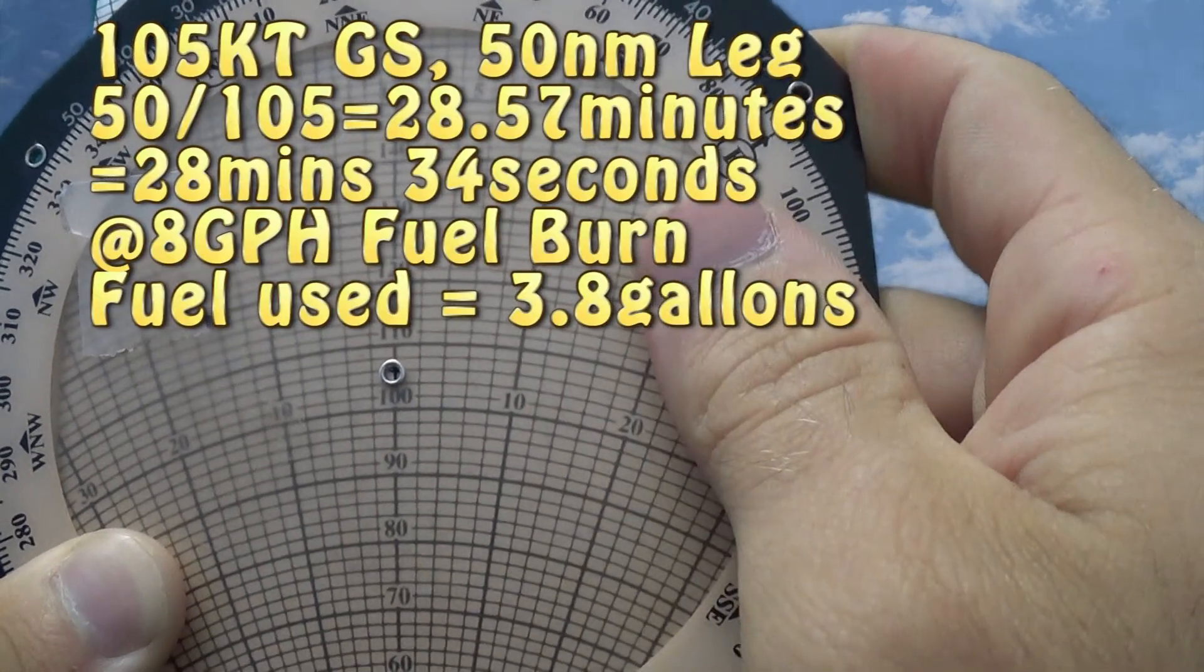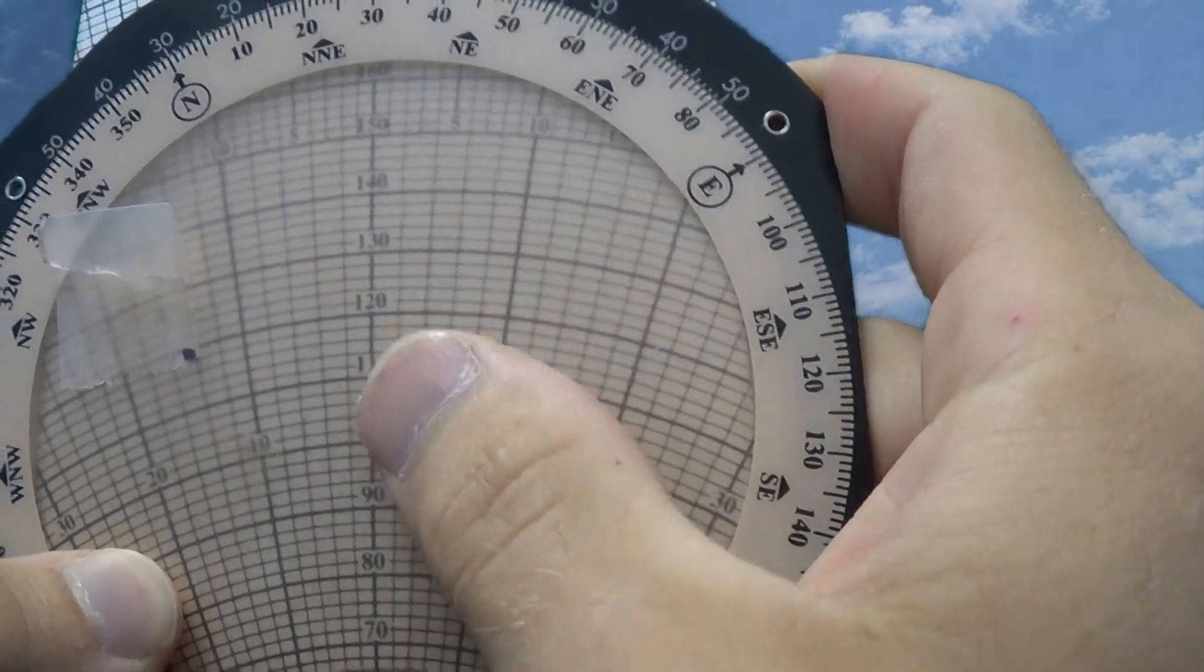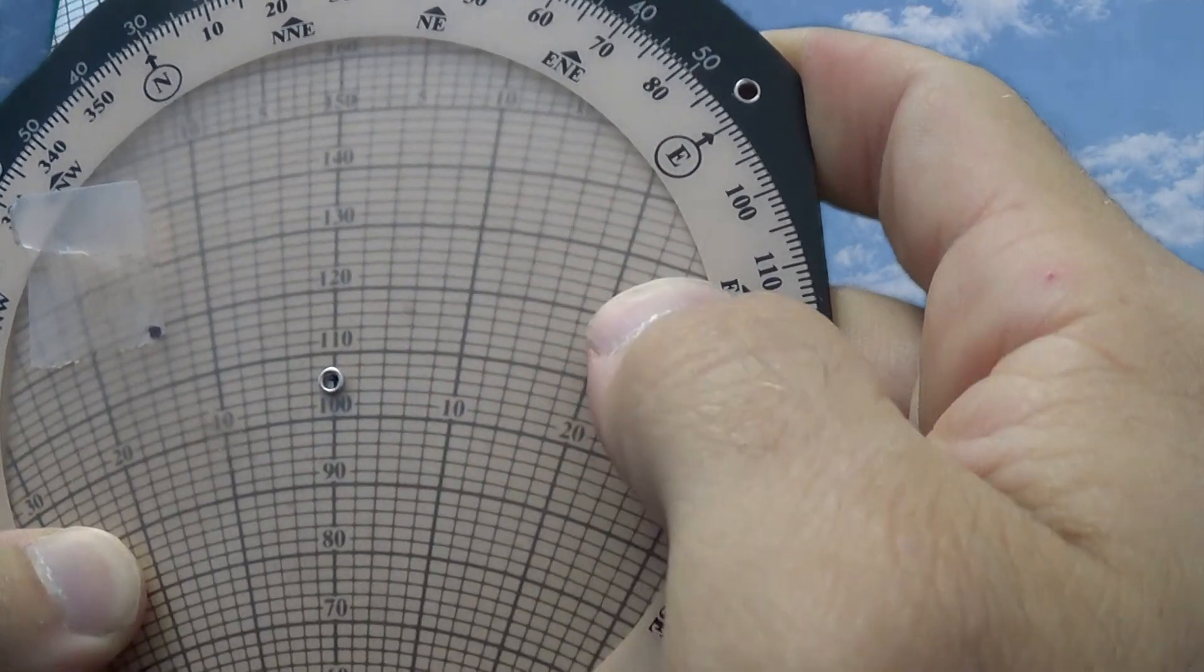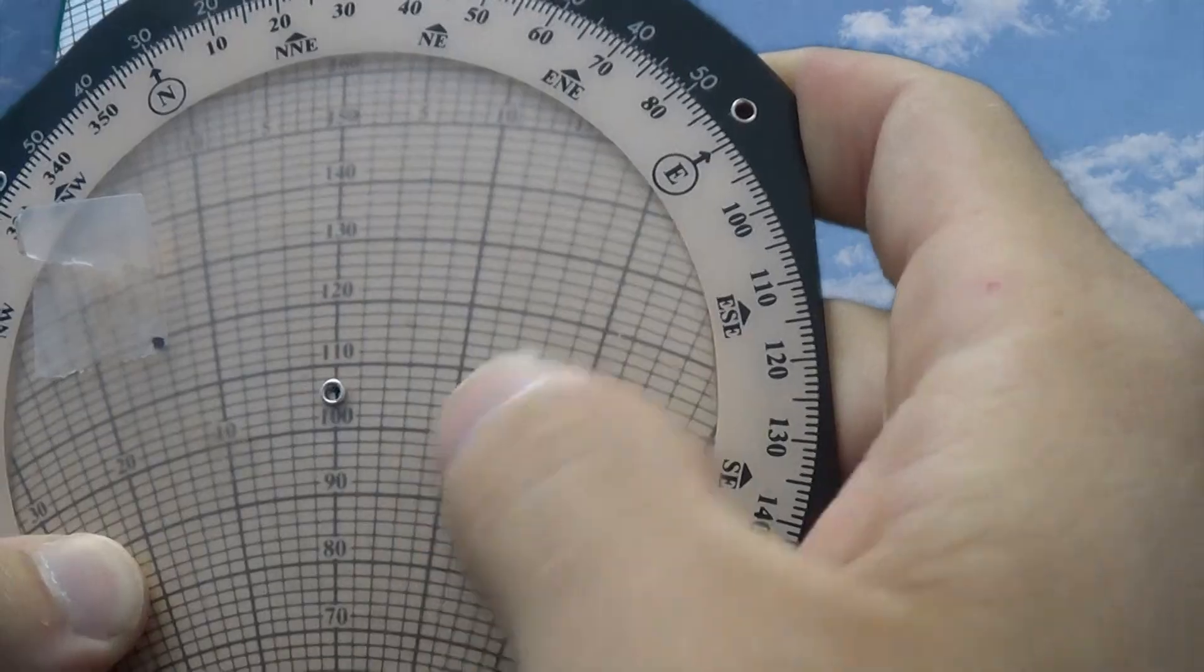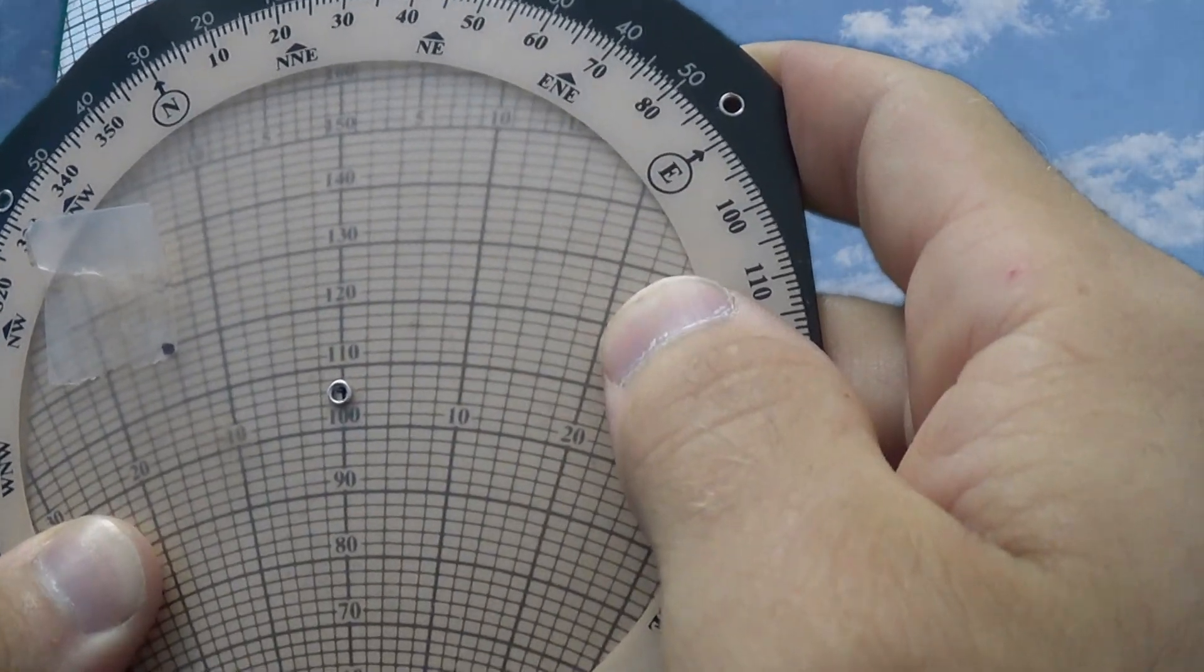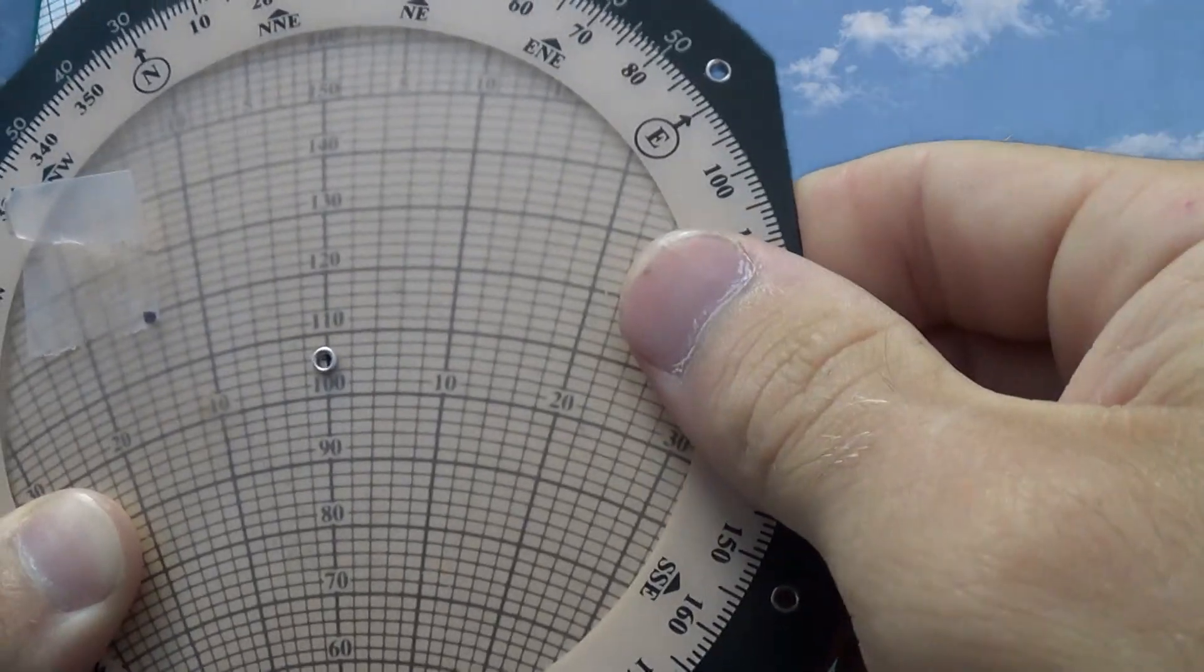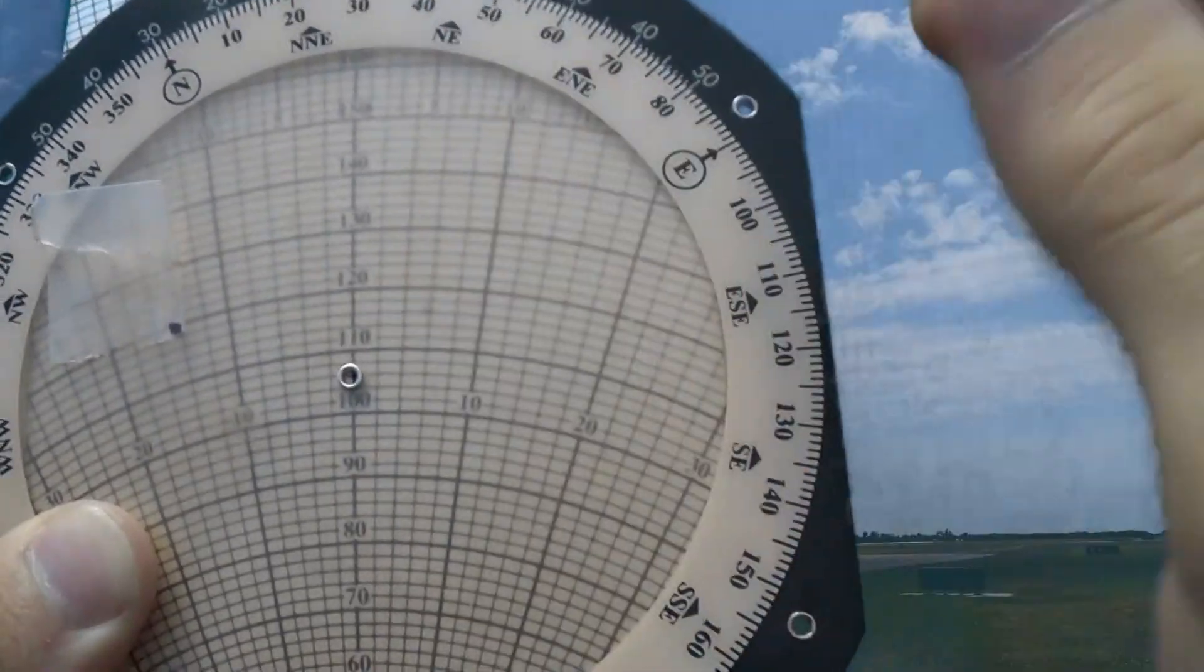So that's how you're going to use your E6B to calculate your ground speed and wind correction angle, given that you have your winds aloft and your true course to begin with. Remember you can always mix and match. If you have your final answer, you could always calculate what the winds aloft are, you could calculate really anything, as long as you have the necessary givens.